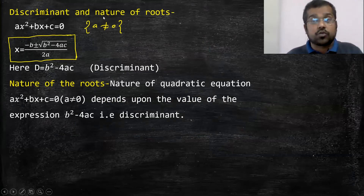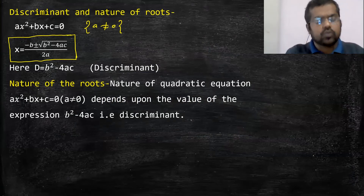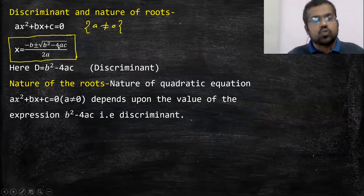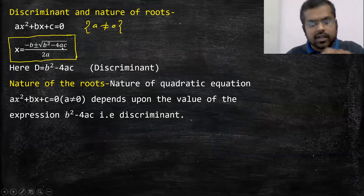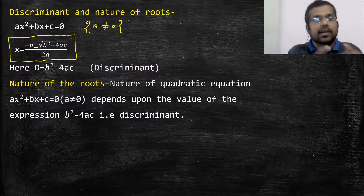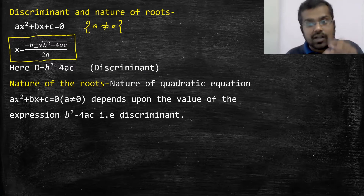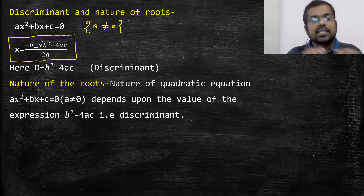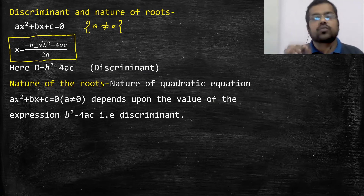x की nature पता करना है — nature of roots मतलब x की value के बारे में पता करना। x की value root वाला term decide करता है — root के अंदर positive है, negative है या 0 है। x का root वाला term को हम discriminant बोलते हैं, d से represent करते हैं, कुछ books में delta से। तो d is going to decide the nature of roots of any quadratic equation।